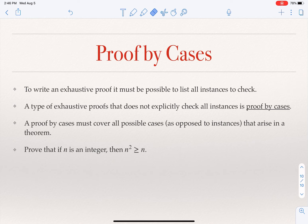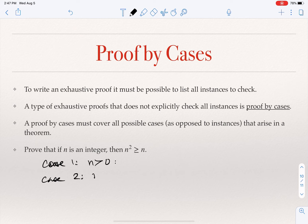The last technique is that you can break a result into cases. For example, prove that if n is an integer, then n² ≥ n. You can look at three cases: case one, n > 0 (positive numbers); case two, n = 0; and case three, n < 0 (negative numbers). These cases exhaust all possibilities — no integer is missed.